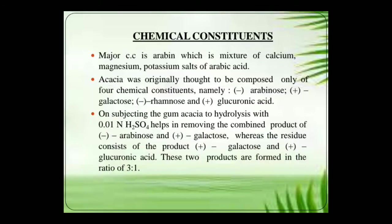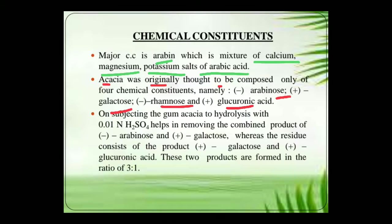The chemical constituents of the gum: it contains Arabin, which is a mixture of calcium, magnesium, potassium, and salts of Arabic acid. Acacia was originally thought to be composed of four chemical constituents: Arabinose, galactose, rhamnose, and galacturonic acid. On subjecting gum acacia to hydrolysis with 0.01 normal sulphuric acid, it helps in removing the combined product of Arabinose and galactose, whereas the residue consists of galactose and glucuronic acid. These two products are formed in the ratio of 3:1.